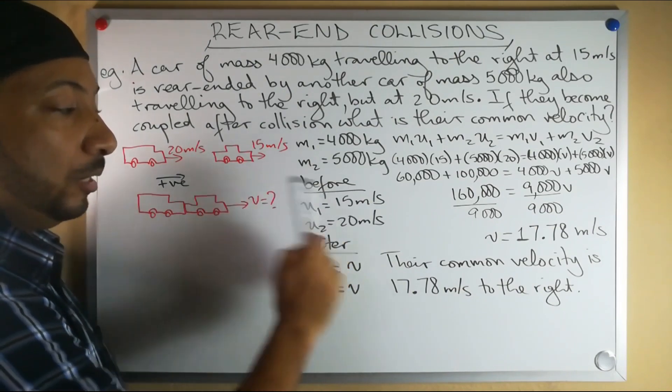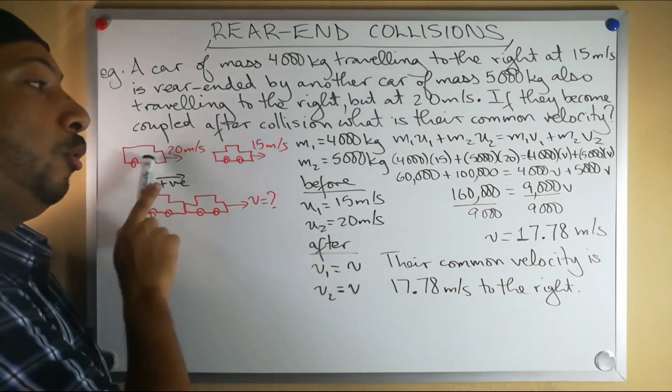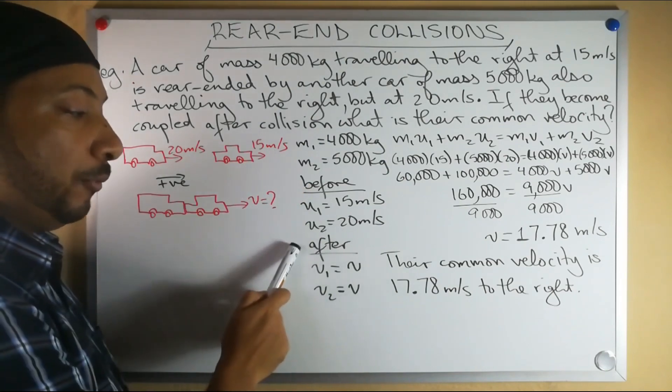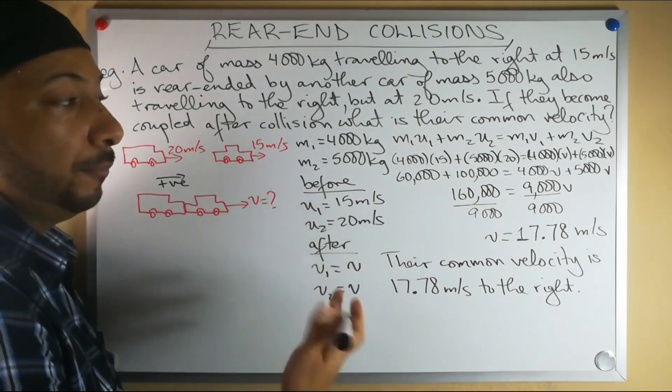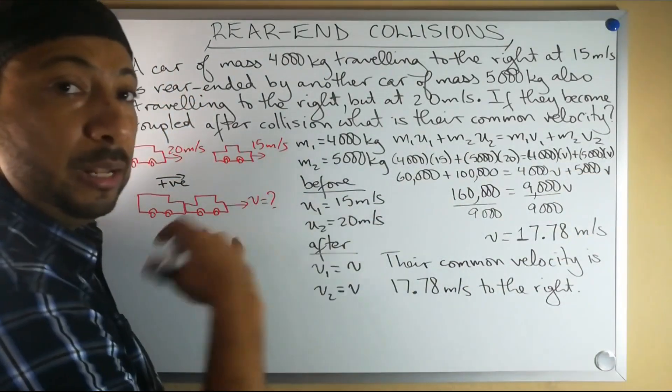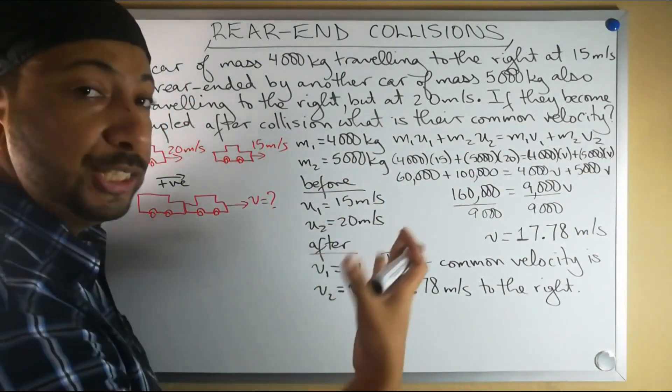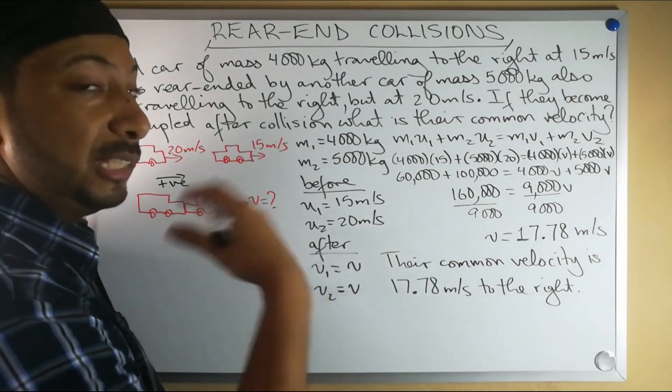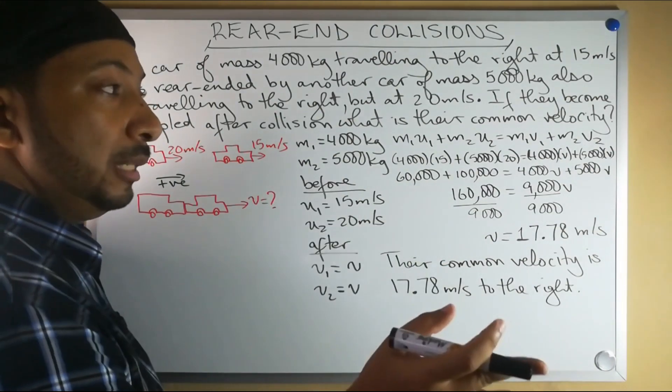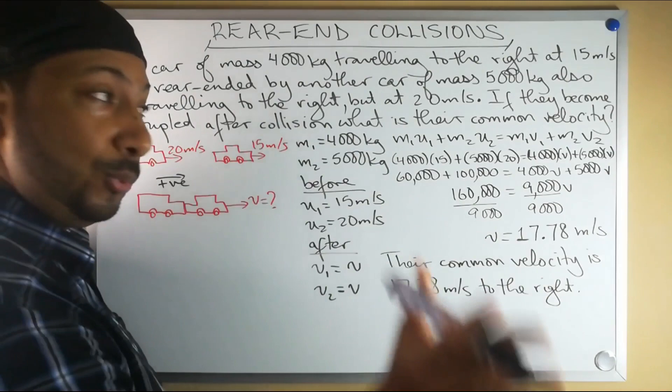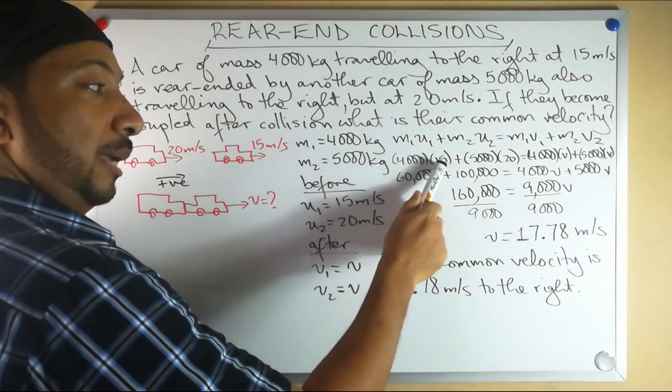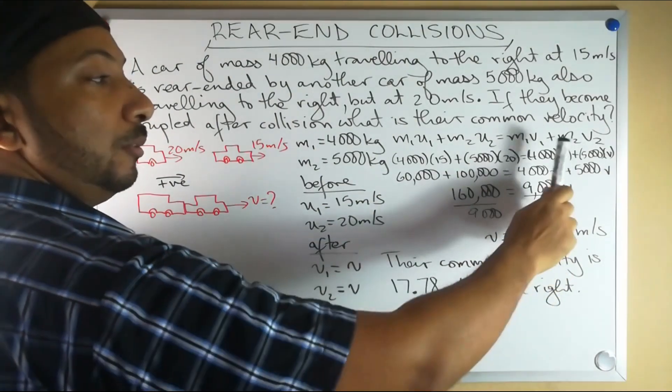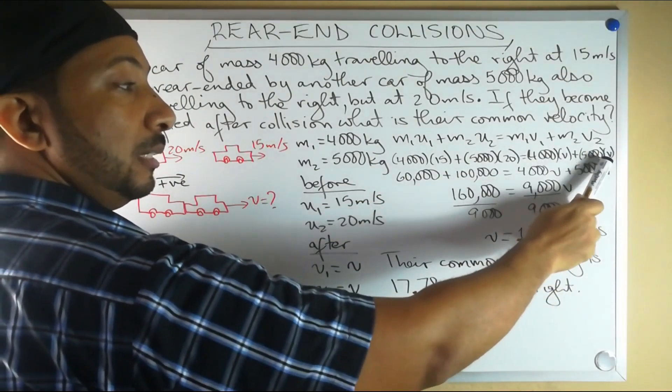Please note none of them are negative - they're both going to the right. Afterwards their common velocity is both V, which we don't know yet. So we write down our formula. Same formula that applies whether it is a head-on collision or a rear-end collision or an explosion. We substitute our values: 4,000 times 15 plus 5,000 times 20 equals 4,000 times V plus 5,000 times V.